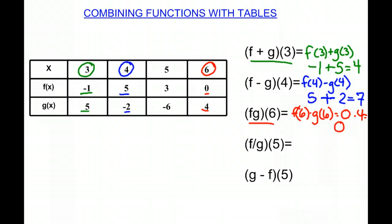So we have (f/g)(5), which is f(5) divided by g(5). So we're looking when x is 5, it's 3 for f(5), and negative 6 for g(5).